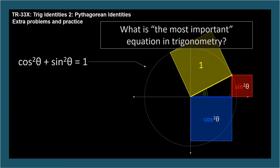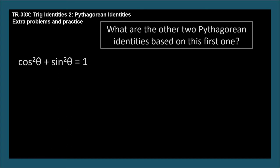What are the other two Pythagorean identities based on the first one? Here they are. We find them by dividing the first by cosine squared theta and then by sine squared theta.